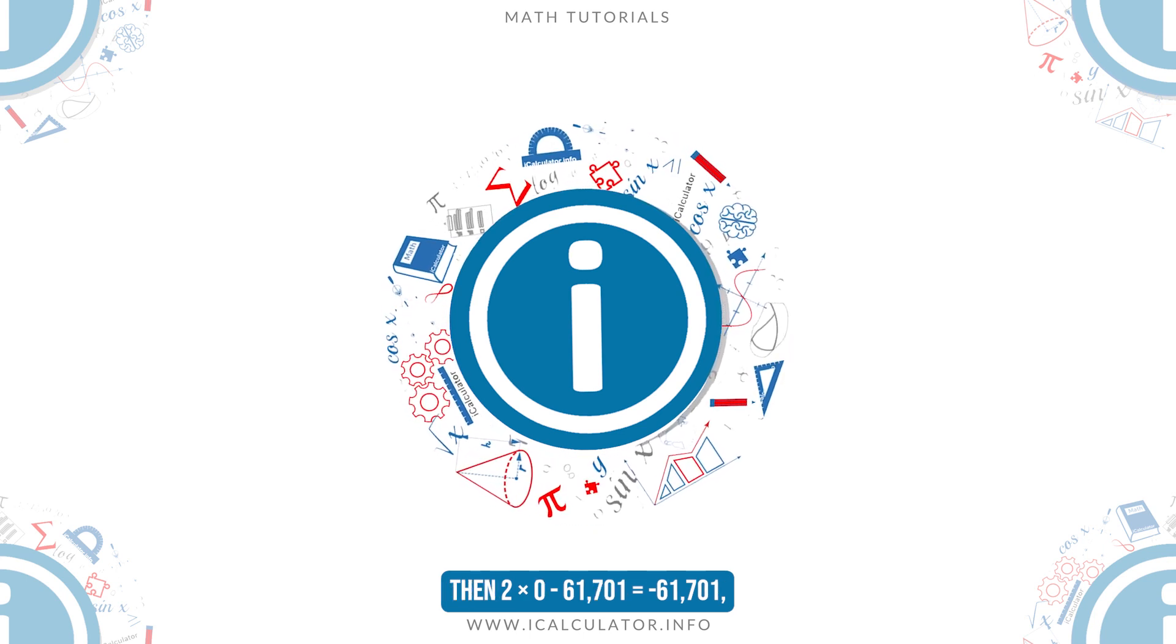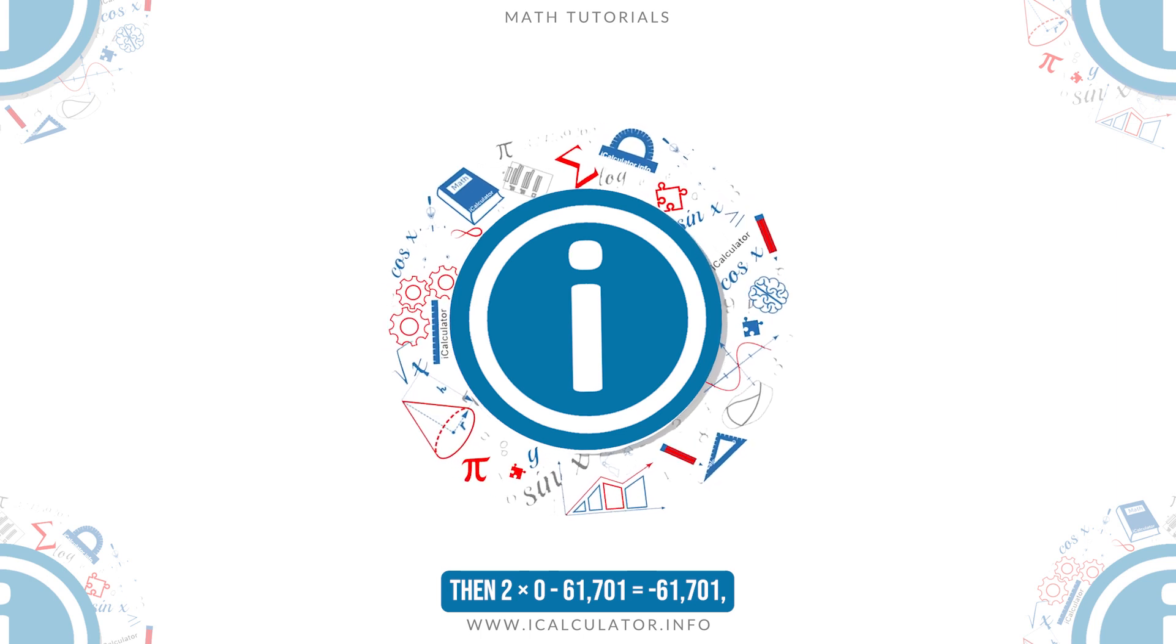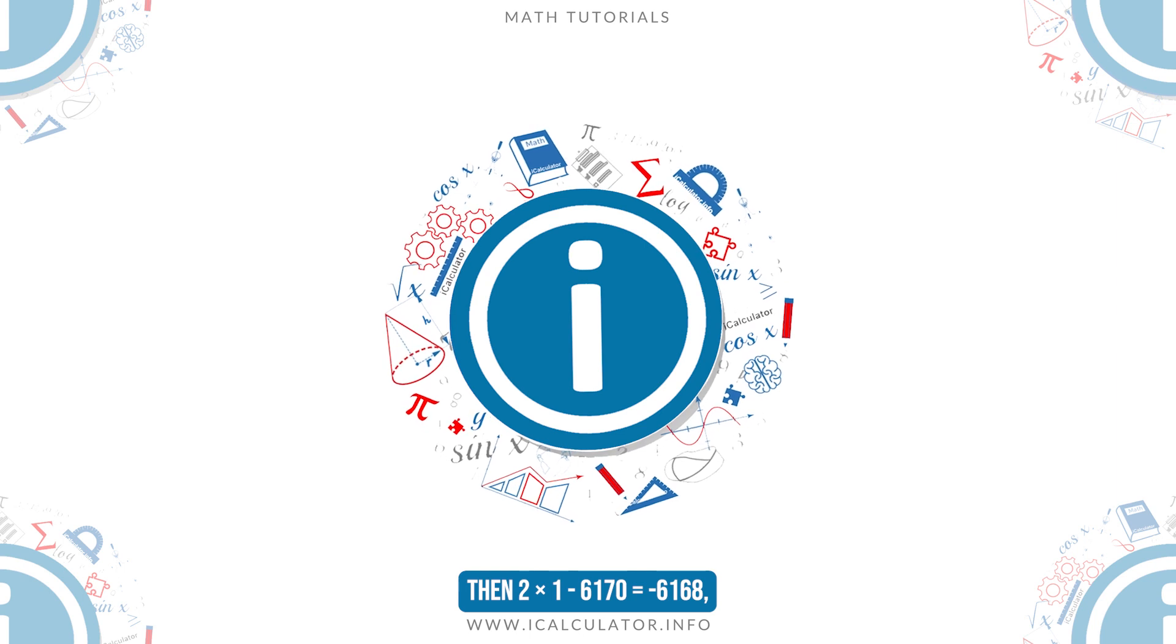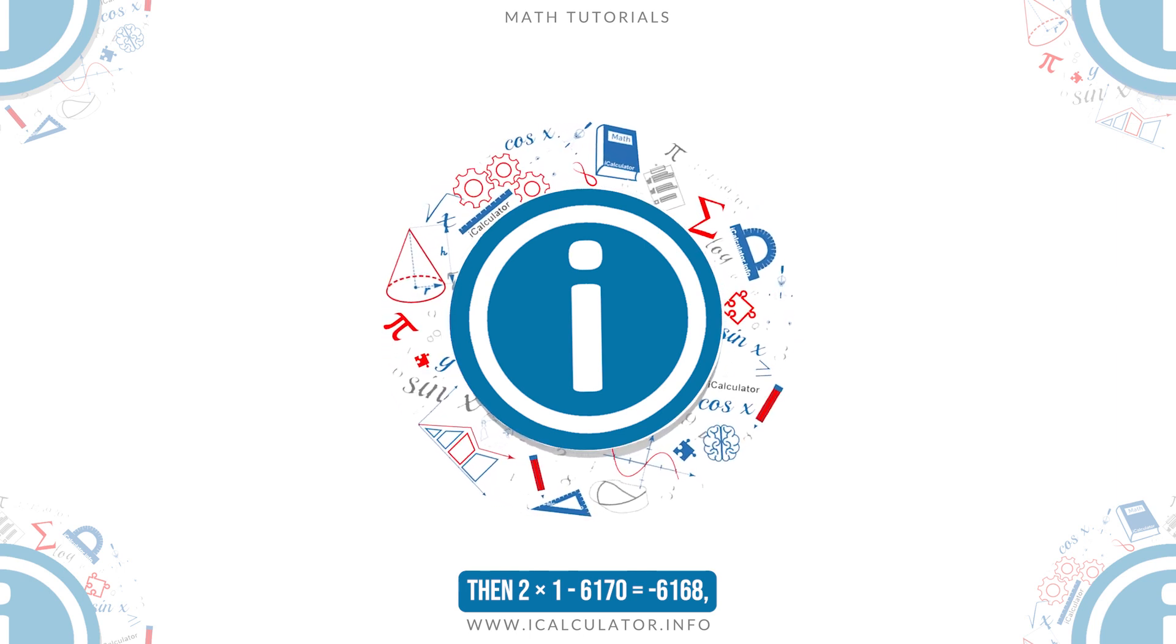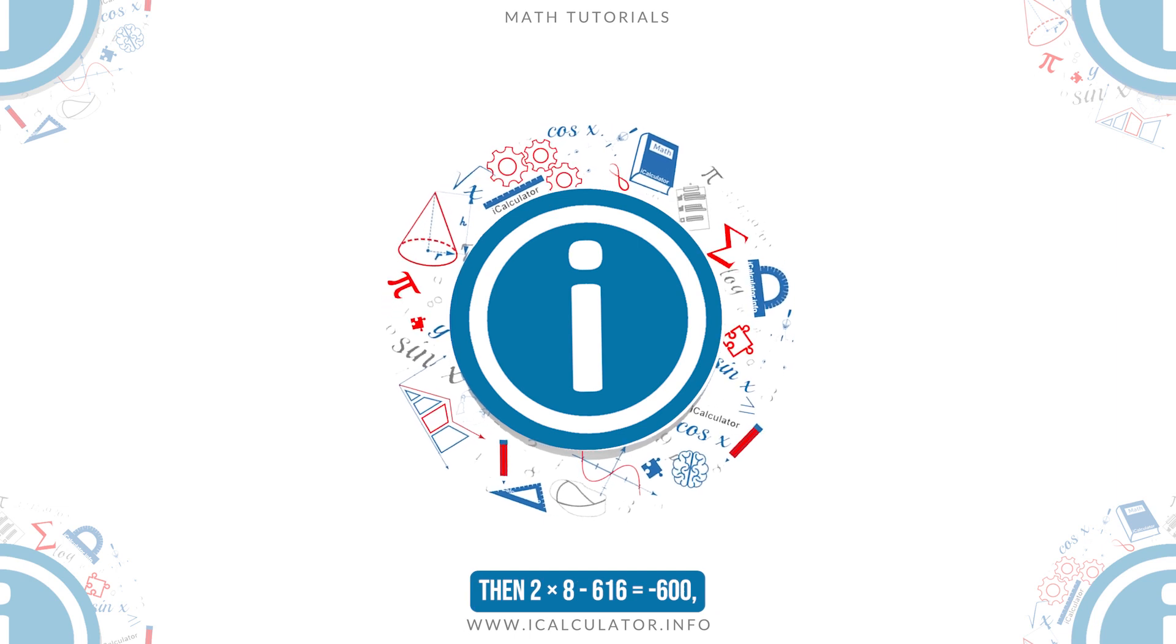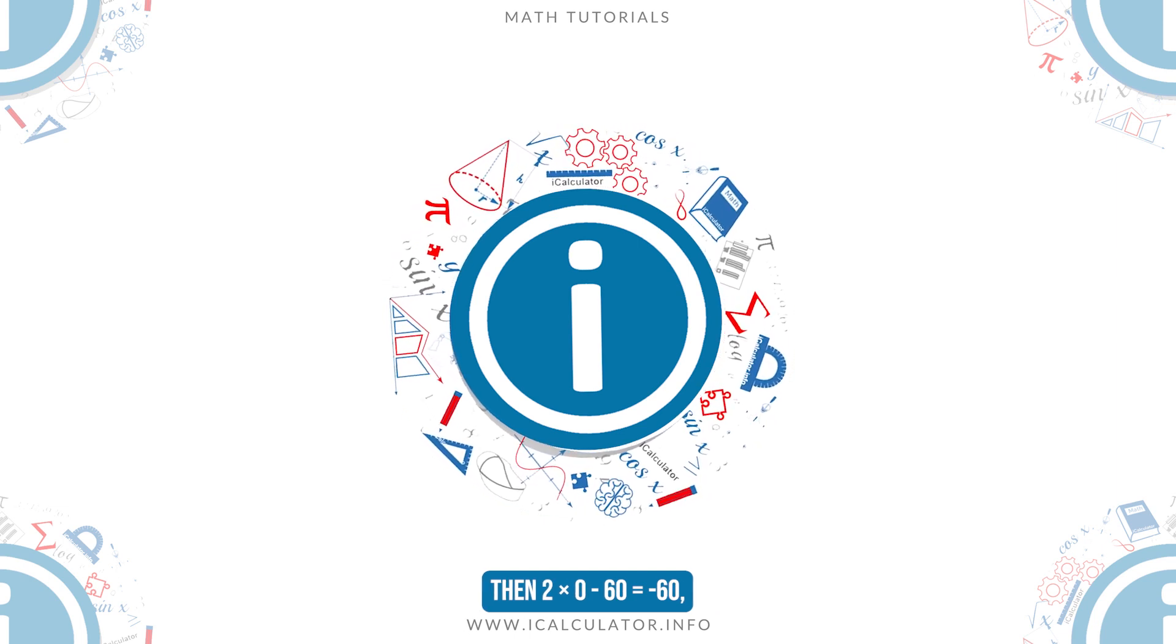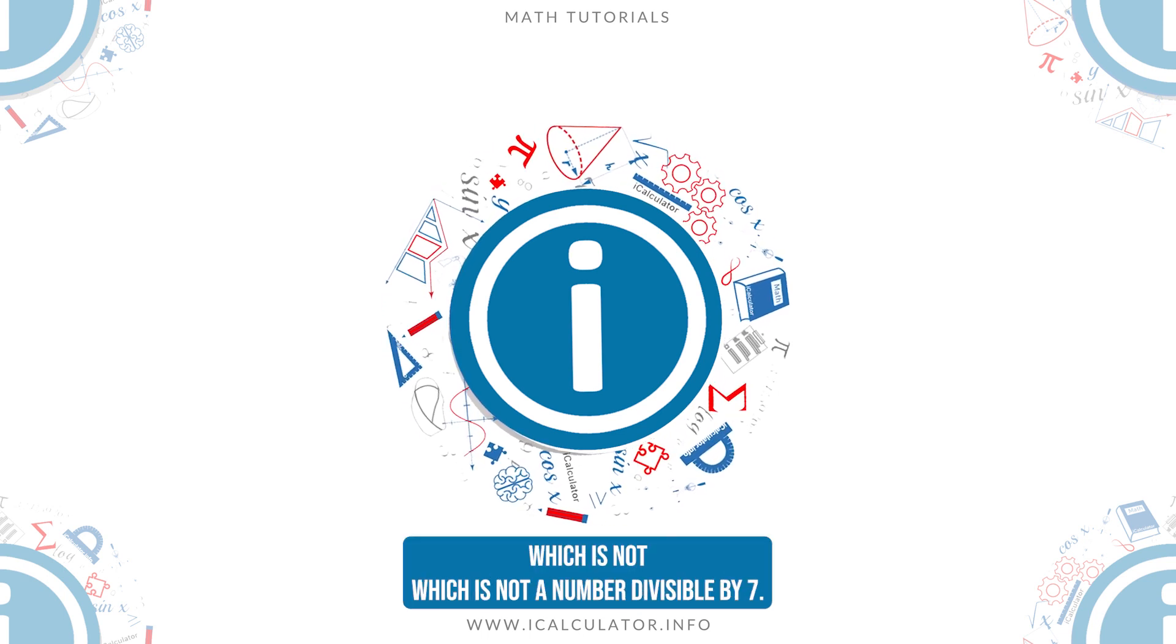Then 2 times 0 minus 61,701 equals minus 61,701, then 2 times 1 minus 6,170 equals minus 6,168, then 2 times 8 minus 616 equals minus 600, then 2 times 0 minus 60 equals minus 60, which is not a number divisible by 7.